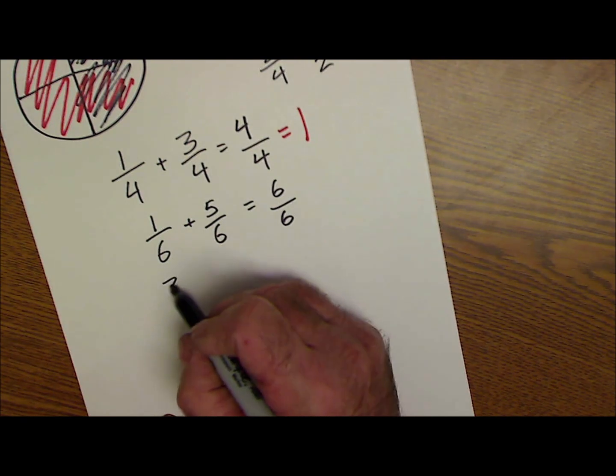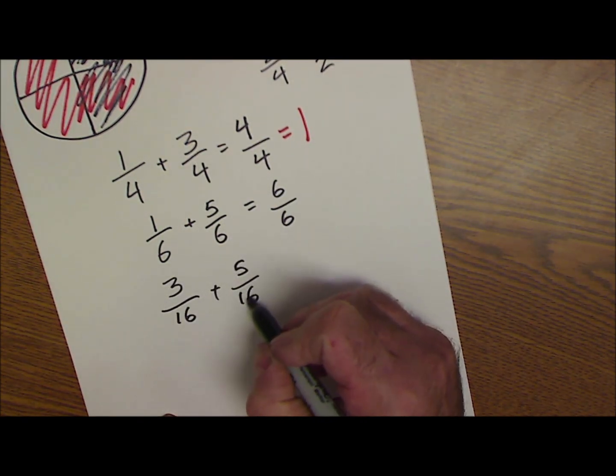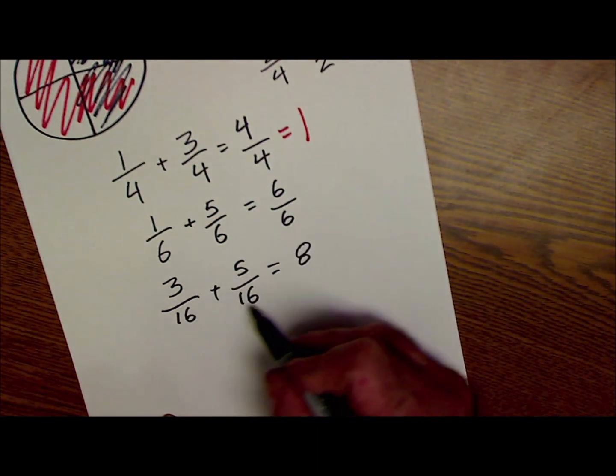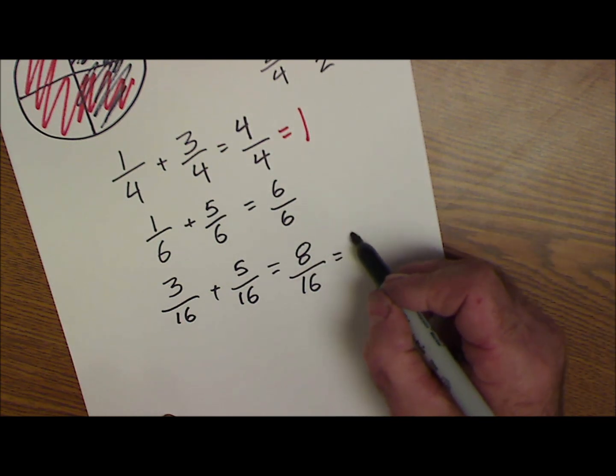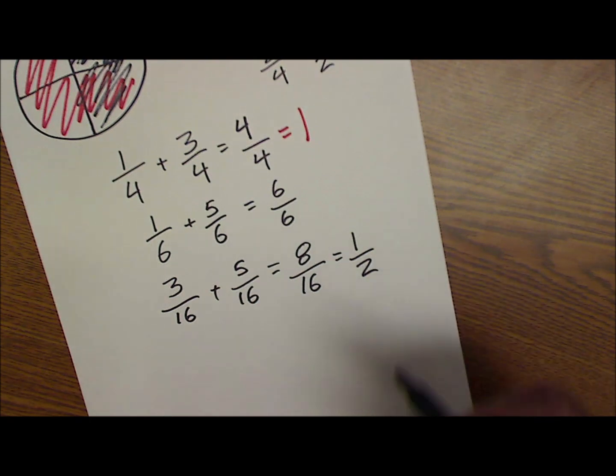If I have three-sixteenths plus five-sixteenths, I add across the top to get eight, bottom number is the same, and I keep it. Eight-sixteenths, eight goes into here one time, eight goes into here twice, so that reduces to one-half.